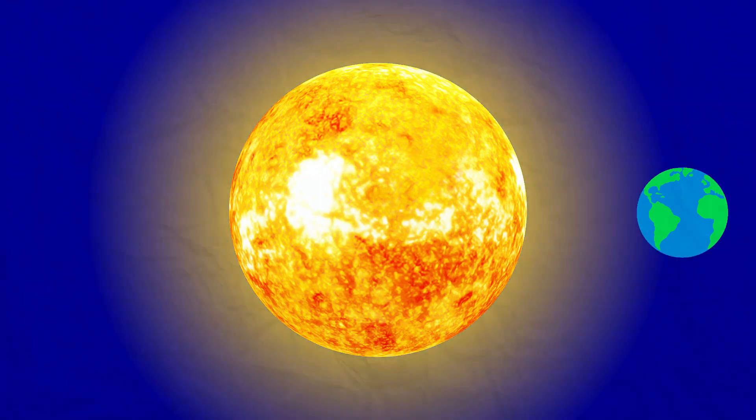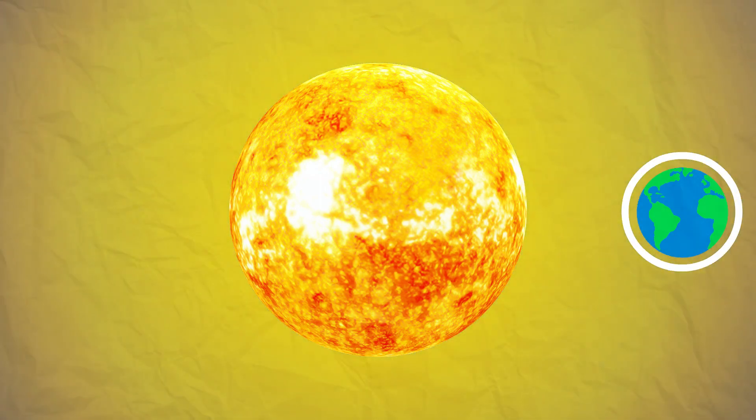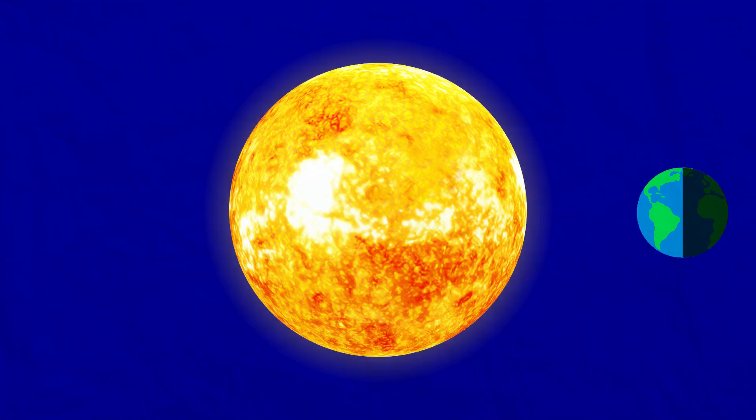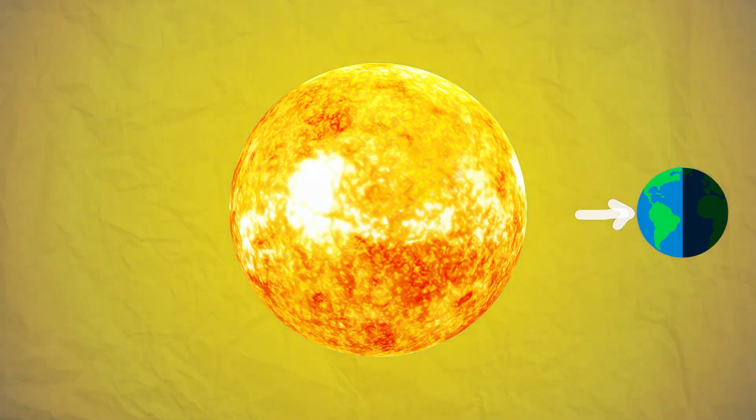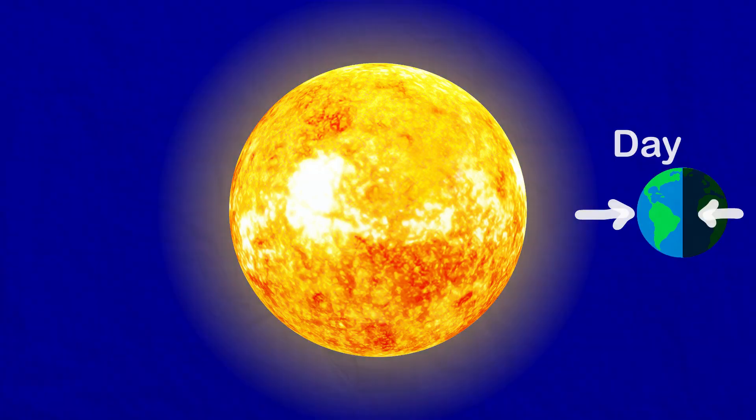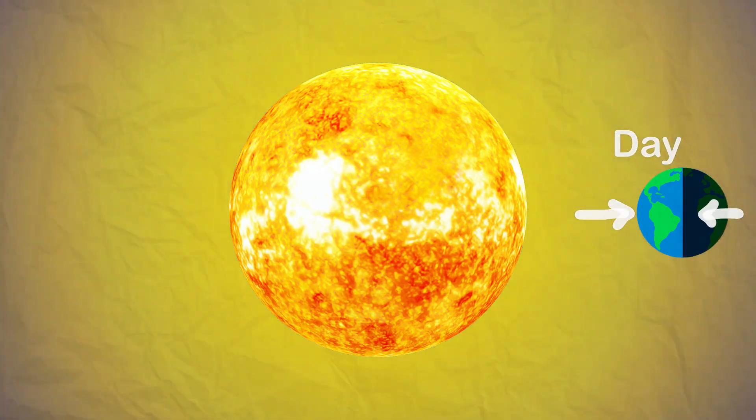Due to the spherical shape of the earth, only half of it gets light from the sun at a time. The portion facing the sun experiences day, while the other half away from the sun experiences night.